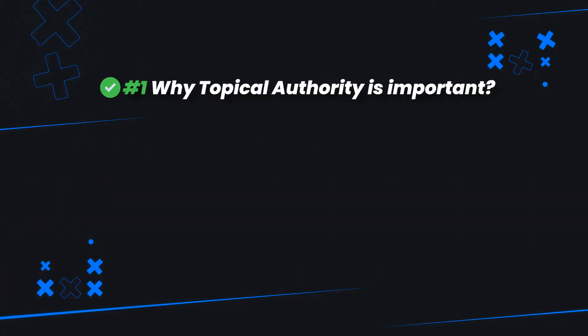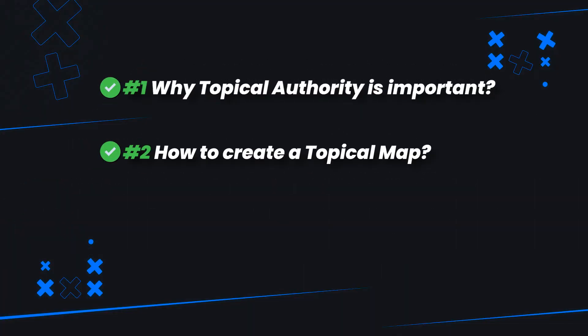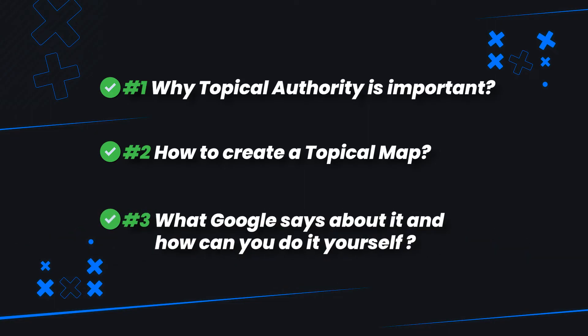All you need to do from here is simply launch your website or the pages you've built and wait for Google to collect that data. Now if you don't want to wait, Rank Math Pro has an instant index feature which will send your pages via API to the Googlebot and your pages will be looked at instantly. I do highly suggest using Rank Math Pro if you use WordPress. I hope these notes and this guidance help you understand: number one, why topical authority is important; number two, how to create a topical map; and number three, what Google says about creating that topical map and how you can do it yourself.